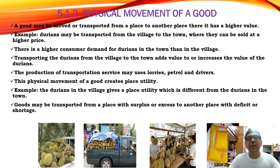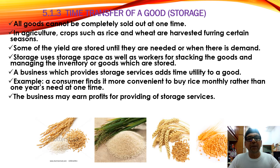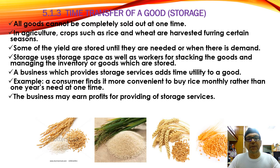That simple analogy — if you can understand, is very good. It's basic knowledge. Sometimes goods cannot be completely sold at one time. In agriculture, crops like rice and wheat are harvested during a certain season. Some of the yield are stored until they are needed or when they are demanded. Storage uses storage space and focuses on stacking the goods and managing the inventory. This is a process — the production process. A business which provides storage service adds time utility to the goods. For example, a customer finds it more convenient to buy rice monthly rather than a whole year's need at one time. The business may earn profit by providing storage services, which we can also call the production process, because it helps to keep the product and sell it at the right stage.